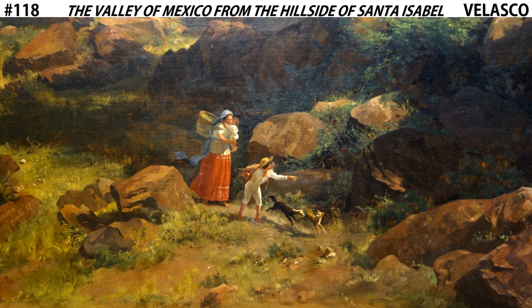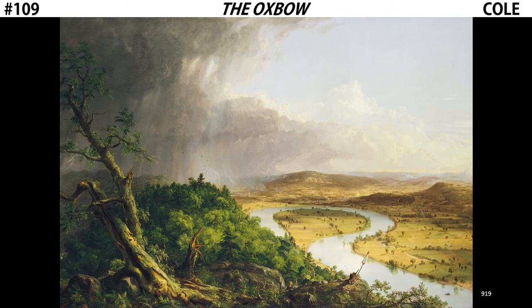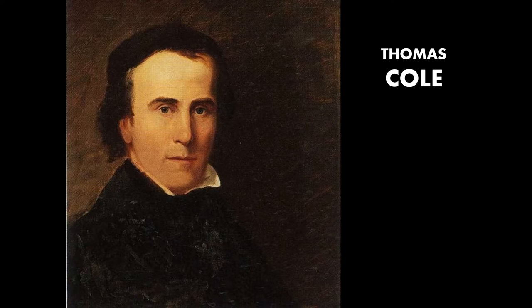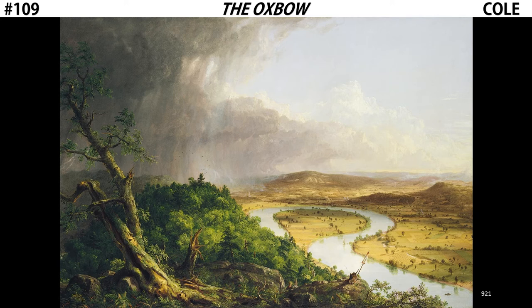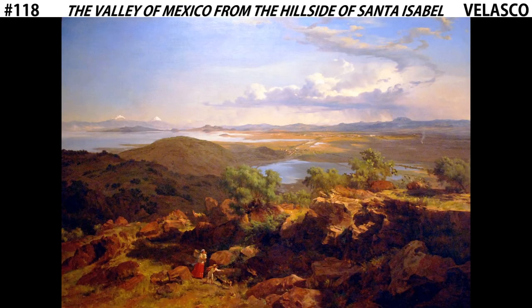This work is reminiscent of The Oxbow by Thomas Cole. If you remember from our chapter about 19th century art, The Oxbow was a romantic landscape that emphasized the sublime power of nature, while at the same time referencing manifest destiny and the cultural identity of America at that time. Similarly, The Valley of Mexico from the Hillside of Santa Isabel is a romantic landscape that focuses on the sublime vastness of nature while also representing concepts about Mexican identity.